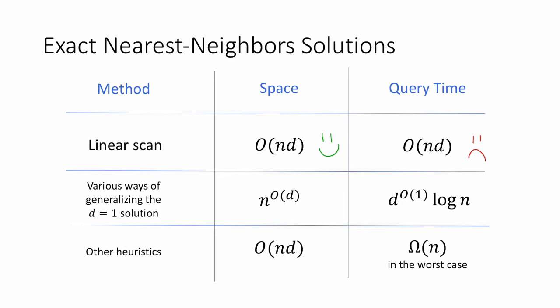There are various ways of generalizing the d equals one solution with binary search that we just saw. And indeed, you can get sublinear query time this way. You can get query time polynomial in d and logarithmic in n. If d is not too big, that's great. However, the curse of dimensionality really bites here. And it turns out that the storage for these sorts of algorithms is big, exponential in d. So that's not great. There are some other heuristics with optimal space, but in the worst case for large enough dimension, they tend to have linear query time.